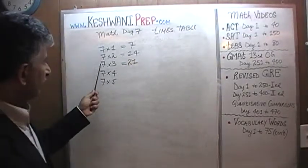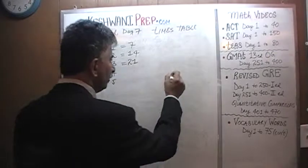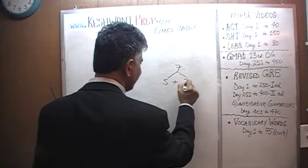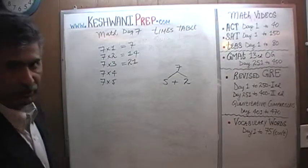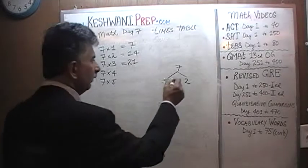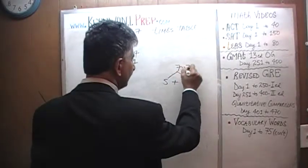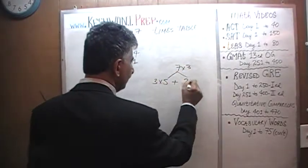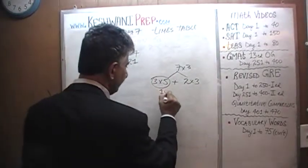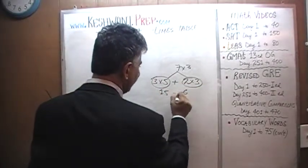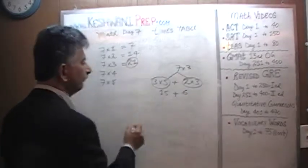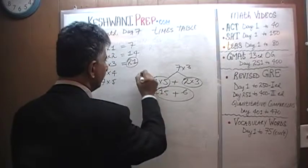Another way we can figure out 7 threes is that in your mind, look at 7 as 5 plus 2. Of course 7 is 5 plus 2 — nobody is going to argue with that. And how many 7s do we need? We need 3 of them. So we need 3 fives and 3 twos. 3 fives is 15, 3 twos is 6, and 6 plus 15 is 21.